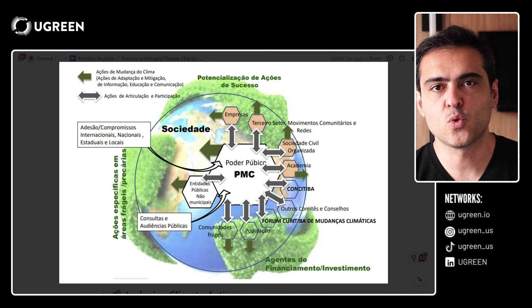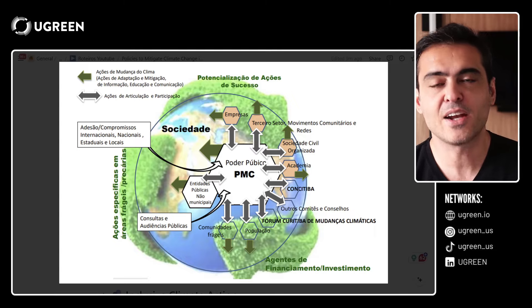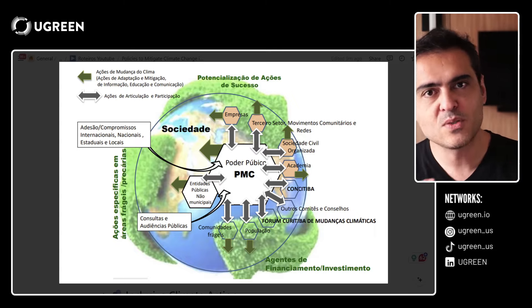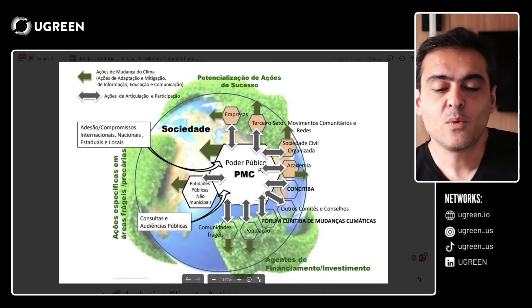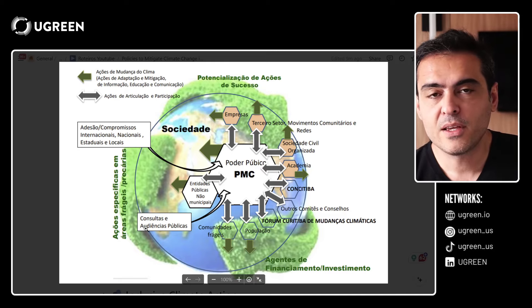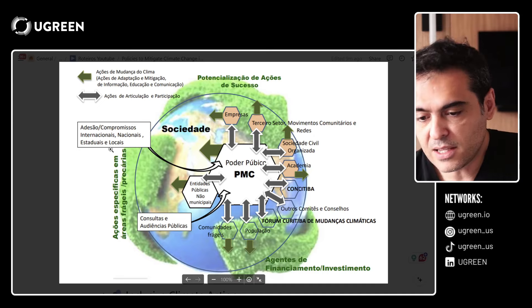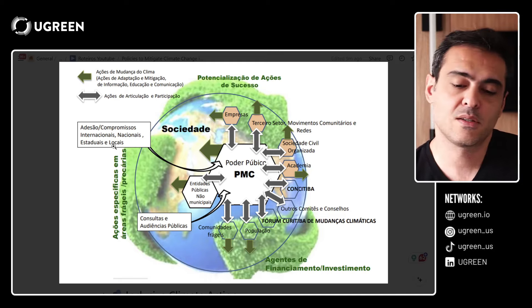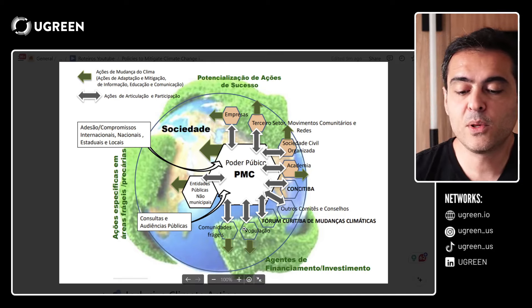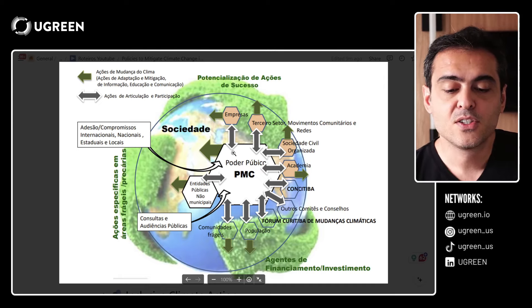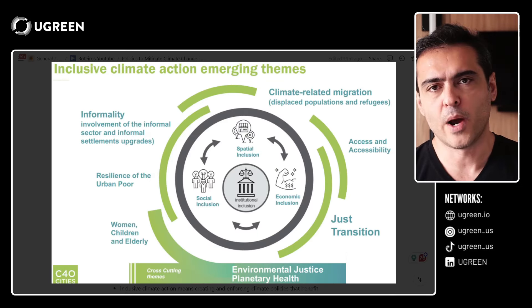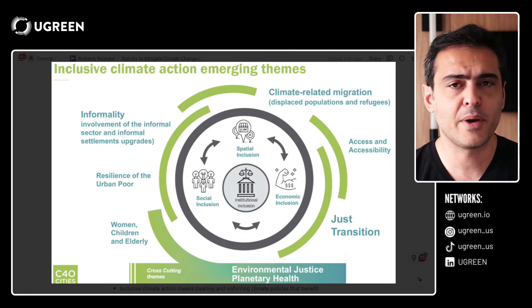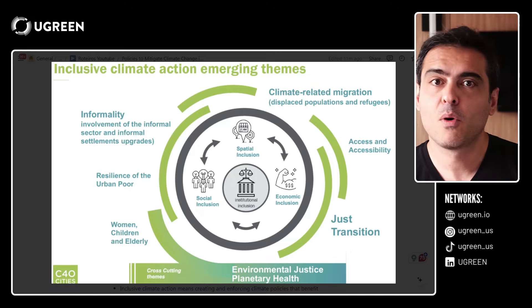Then we need to talk about governance — the institutional structures that will make this possible. All those actions need to be distributed across institutions. Here we can see my city's structure: the city hall, the various institutions, audiences that will provide ideas, and international, national, state and local commitments that feed the system. We have the population and the fragile community. We can't forget inclusive climate action — how the expected social, environmental and economic benefits will reach the population in an equitable way.